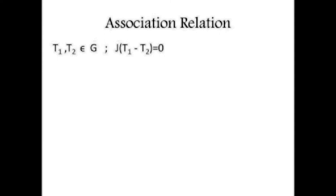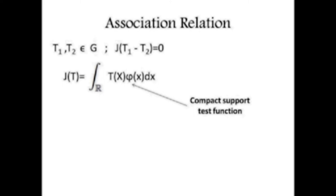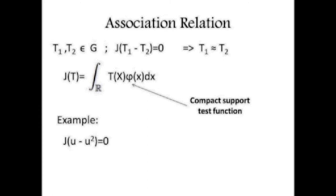To address this problem, Colombeau defined the association relation. Given two distributions T1 and T2 in the Colombeau algebra, we apply a test function to their difference — that is, we take the integral of the distribution times compactly supported functions. If we get zero, we say the two distributions are associated. The difference is a null function in D-prime, so they are essentially the same distribution.